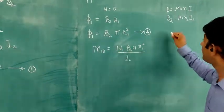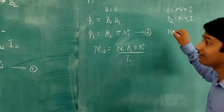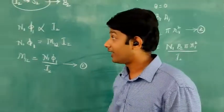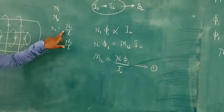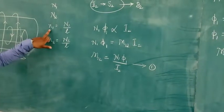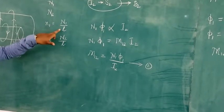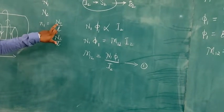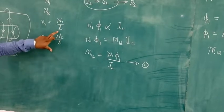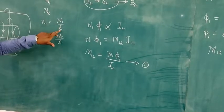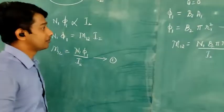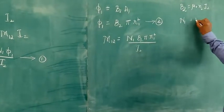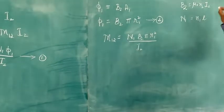We also need N1 (total turns in S1). Since small n1 equals N1 by L (turns per unit length), we get capital N1 equals n1 × L.